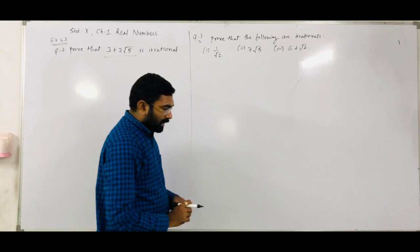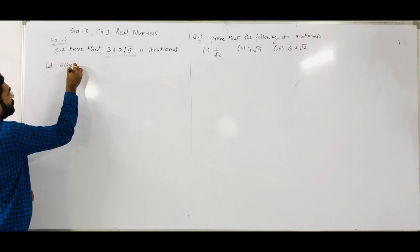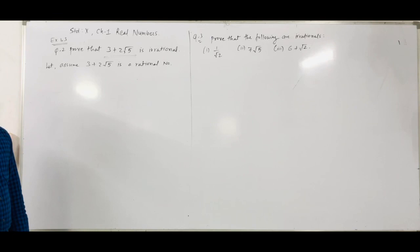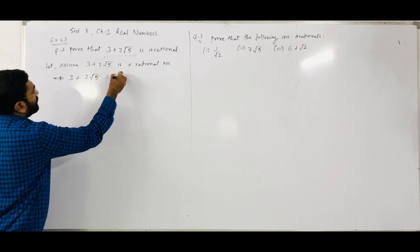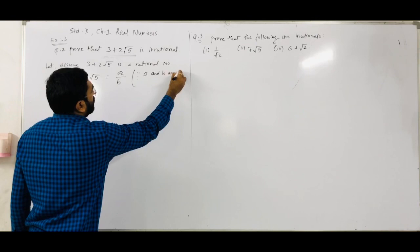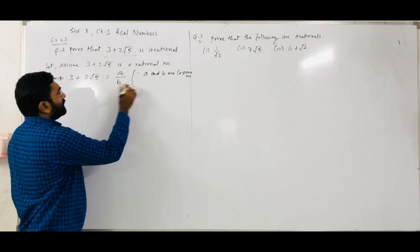Chapter 1 Real Numbers, exercise 1.3, question number 2: prove that 3 plus 2 root 5 is an irrational number. Whatever number we have to prove irrational, first take it as a rational number. So let's assume 3 plus 2 root 5 is a rational number, equal to a/b, where a and b are co-prime numbers and b is not equal to 0.